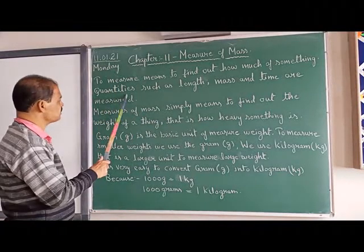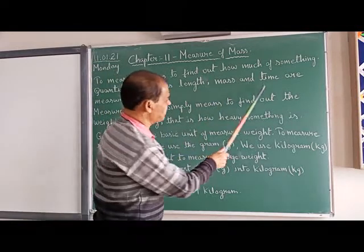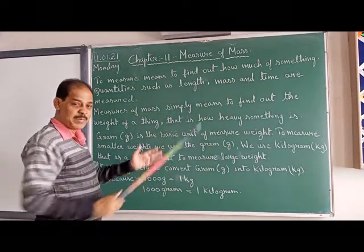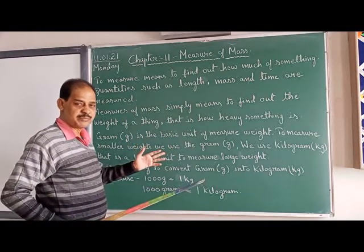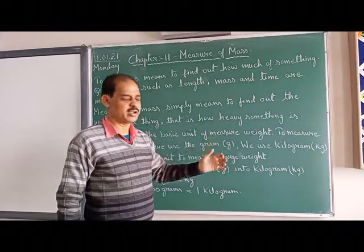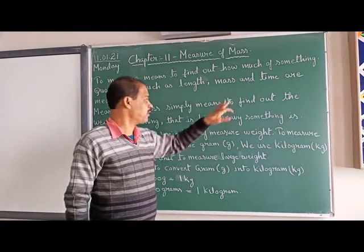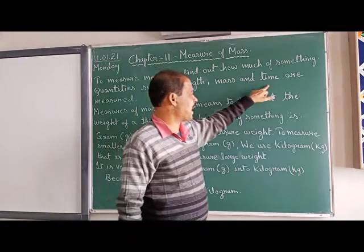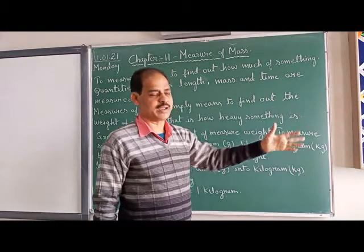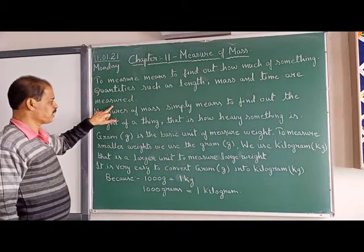Quantities such as length, mass, and time are measured. Length — lambaai — uusko miyokyo naapte hai. Mass means ojan — kilogram, gram — kitna bhari, mass uusko pohutte hai. Time — time ki samayte hai, ek ghanta samay laga hai, do ghante samay laga hai — uusko alag measure karte hai.